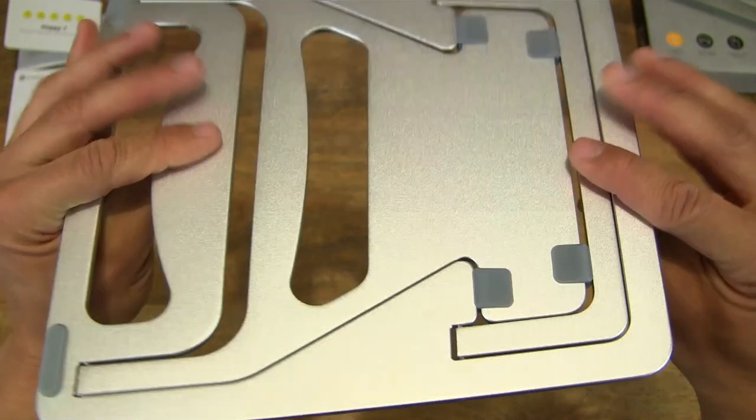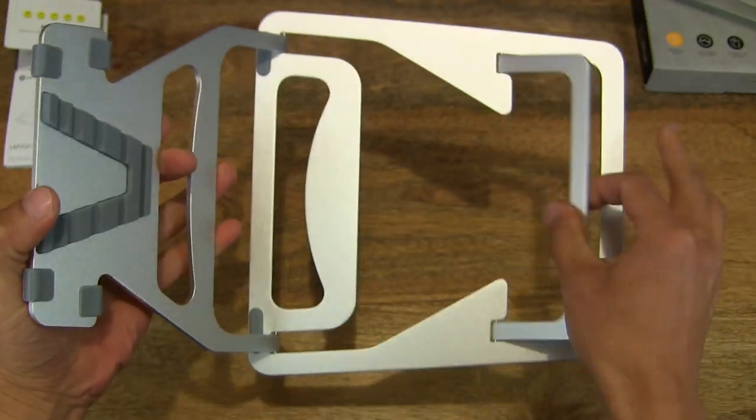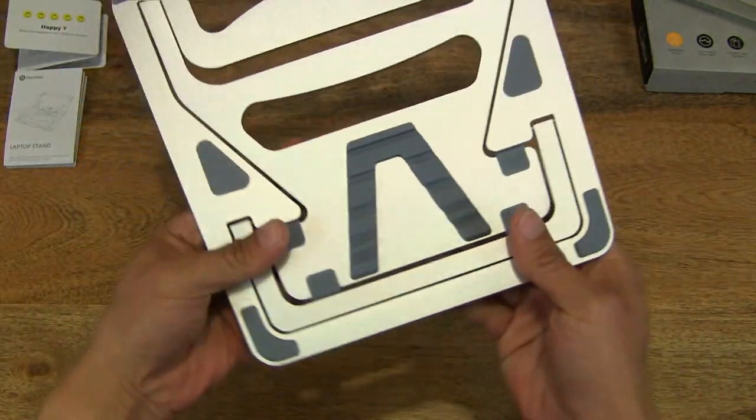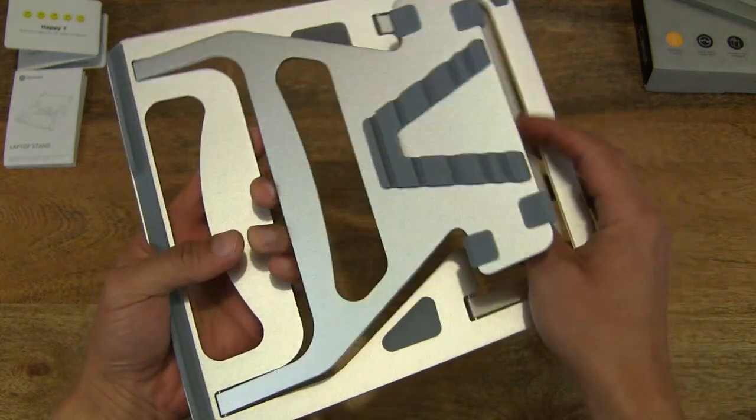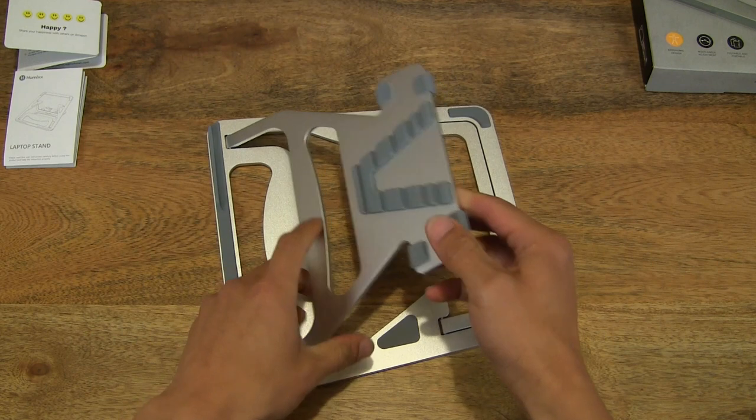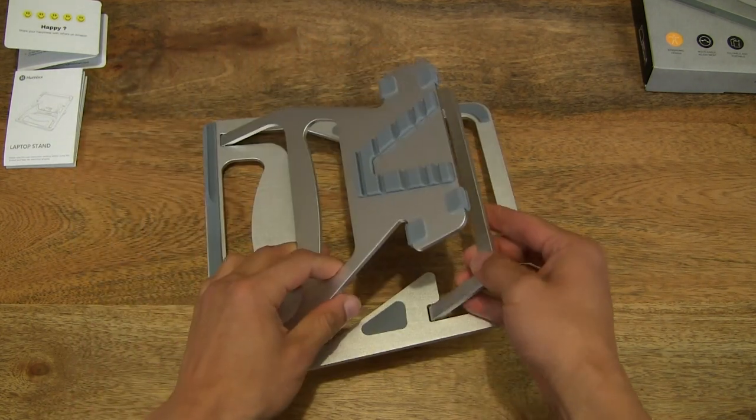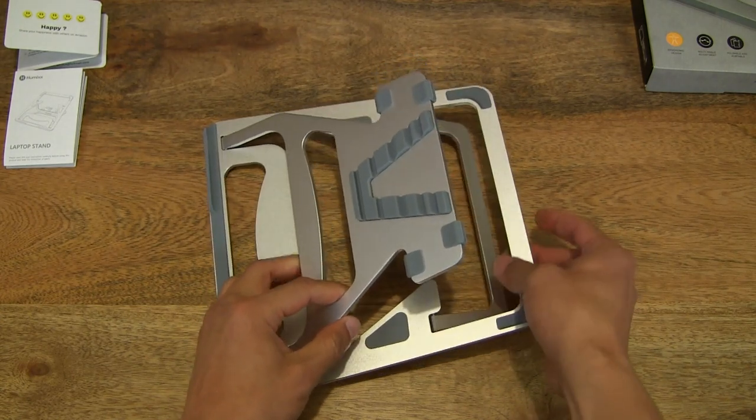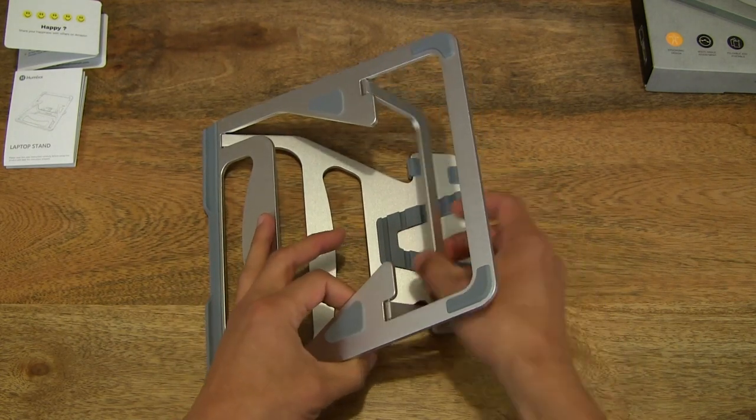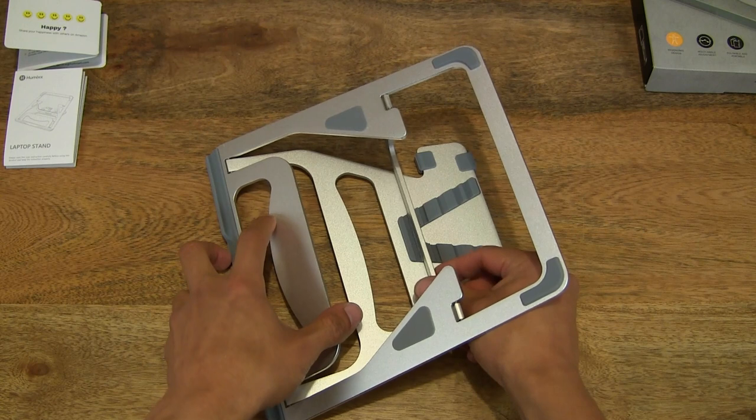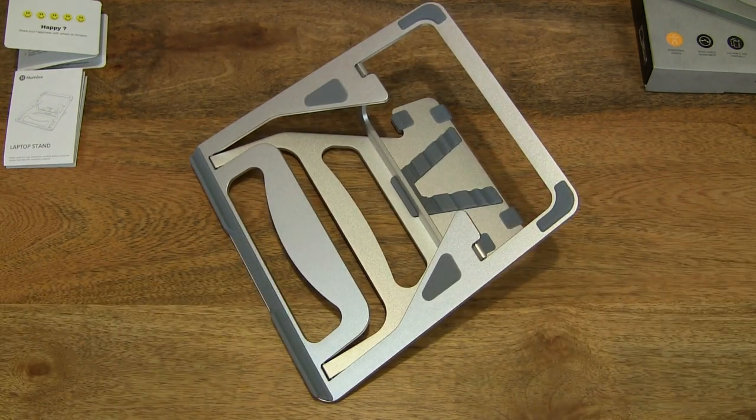And just going to show the articulation as well. Obviously these parts do separate. There we go. And now just trying to figure out which is the base and which part goes where. So the stand does work, I'm just going to figure this one out. Bit of a puzzle here. So I'm using the box illustration for reference. And there we go. So that is the laptop stand set up.